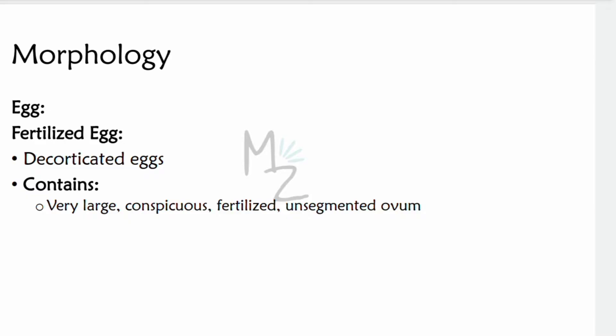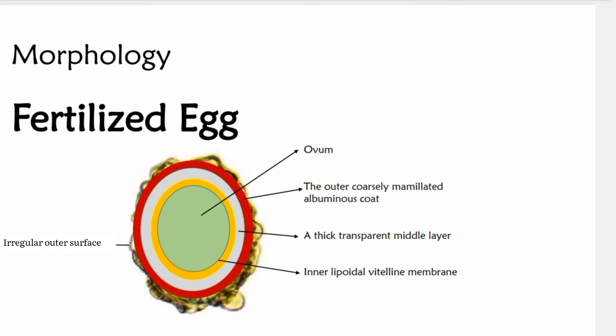The fertilized egg contains a very large, conspicuous, fertilized and unsegmented ovum. Here you can see this one is the ovum.